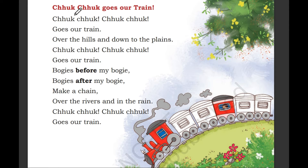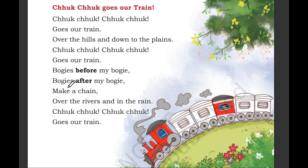Let us sing. Chuk chuk chuk chuk, goes a train. Over the hills and down the plains. Chuk chuk chuk chuk, goes a train. Bogies before my bogie, bogies after my bogie. Make a chain — train over the river and in the rain, chuk chuk chuk chuk, goes our train.